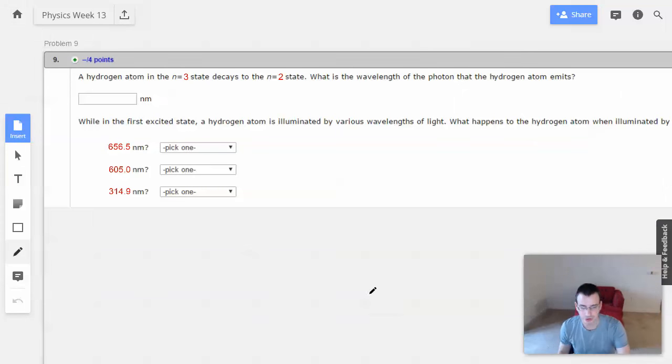So if I'm going to draw myself a picture, I'm going to have a line, a line, a line. And this will be n equals 1, n equals 2, n equals 3 energies.